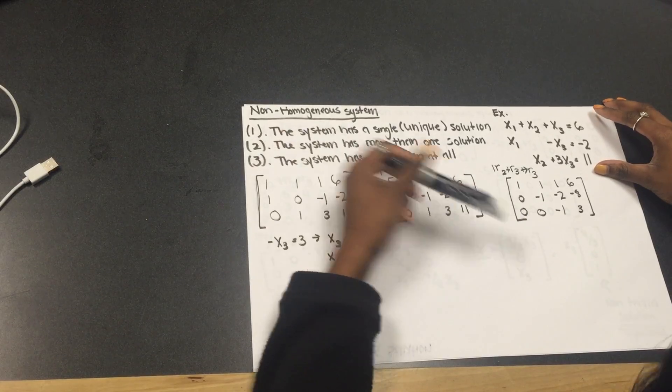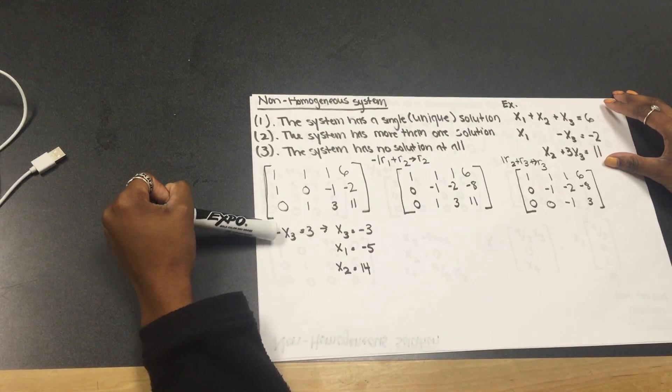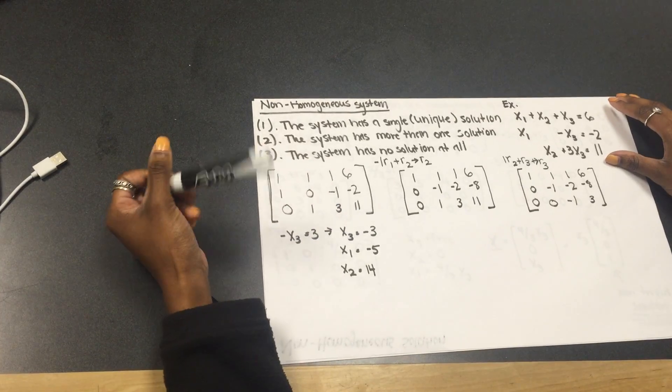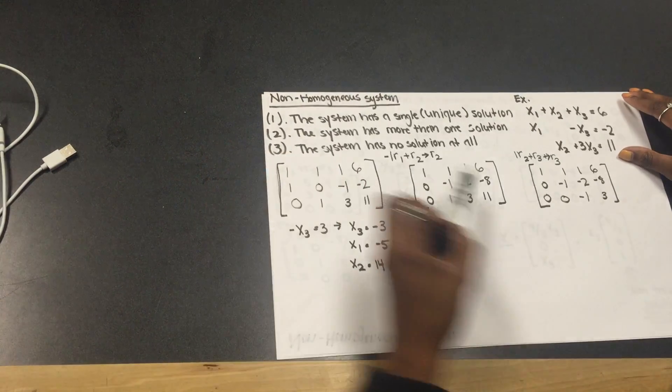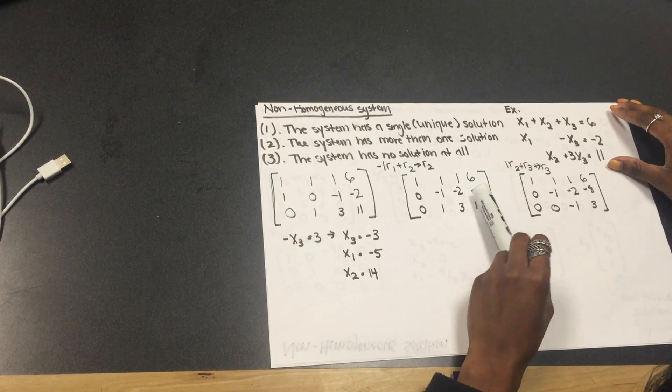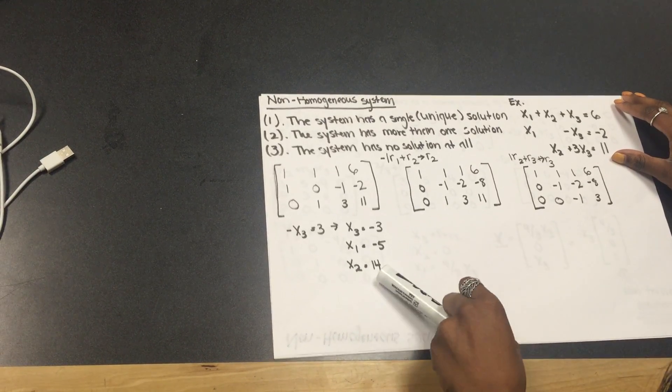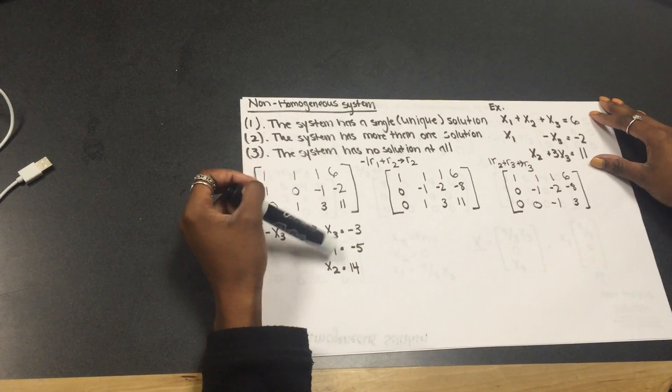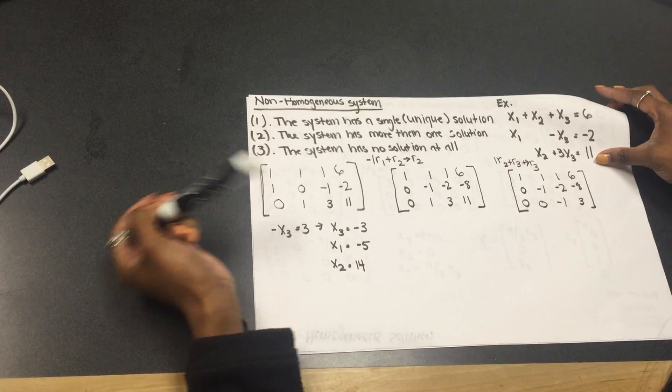Once we get the augmented matrix like this, you can solve, and you get negative x3 is equal to three, and then x3 is equal to negative three. And once you solve for that, you input it into this equation, and you get x2 is equal to 14, then you input that into this equation, and you get x1 is equal to negative five.